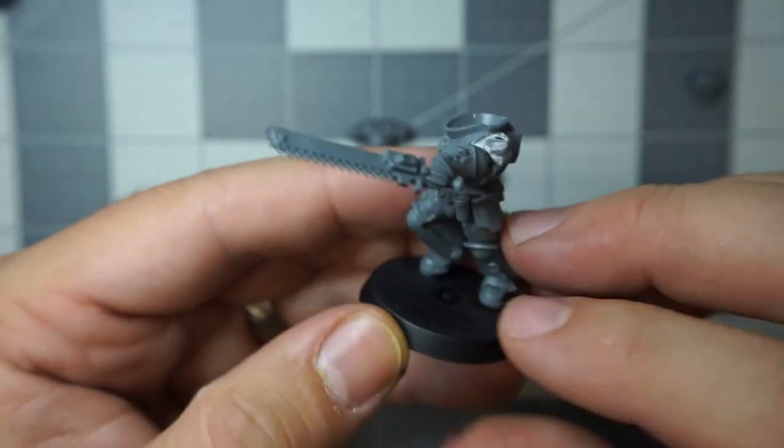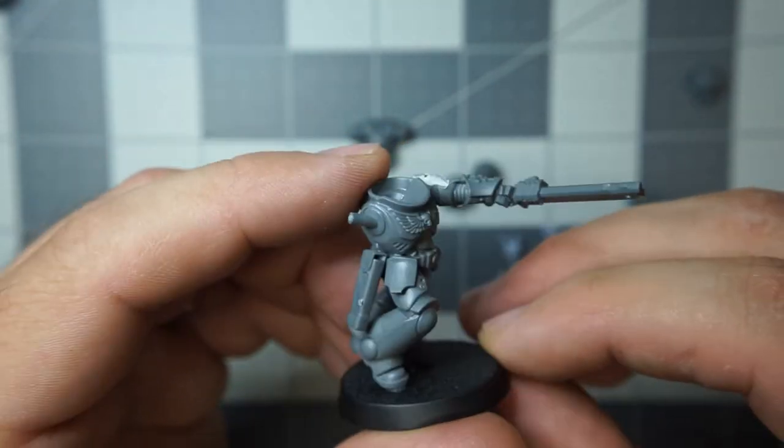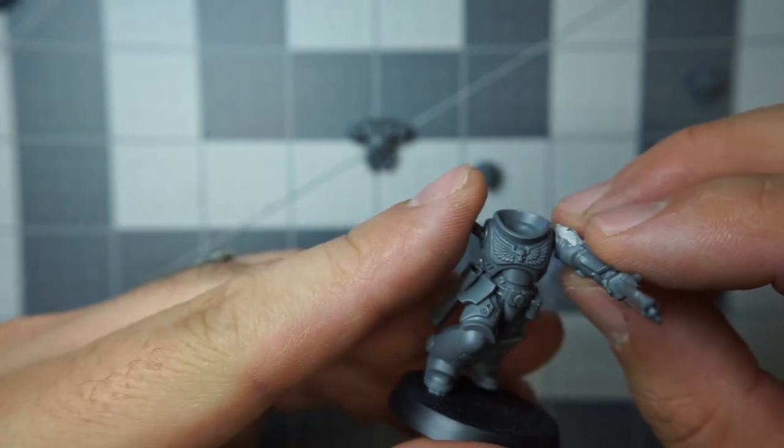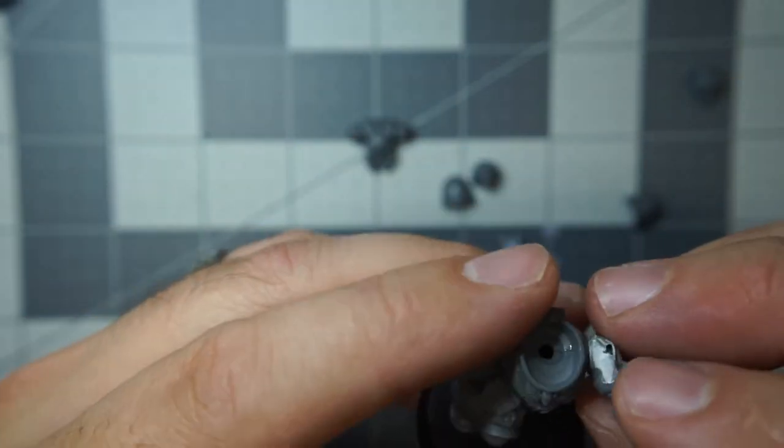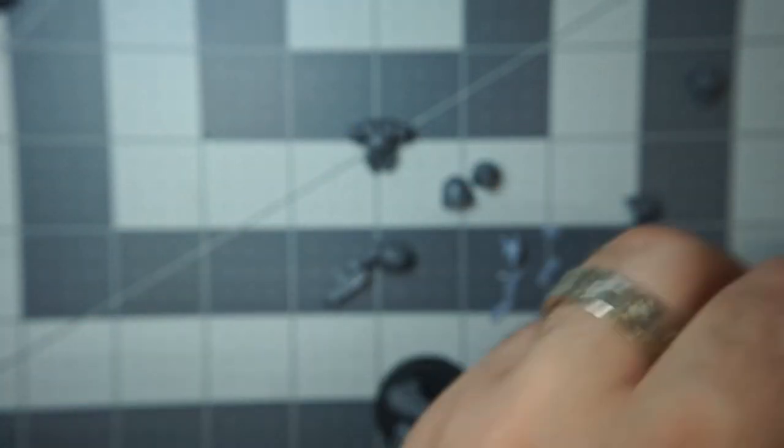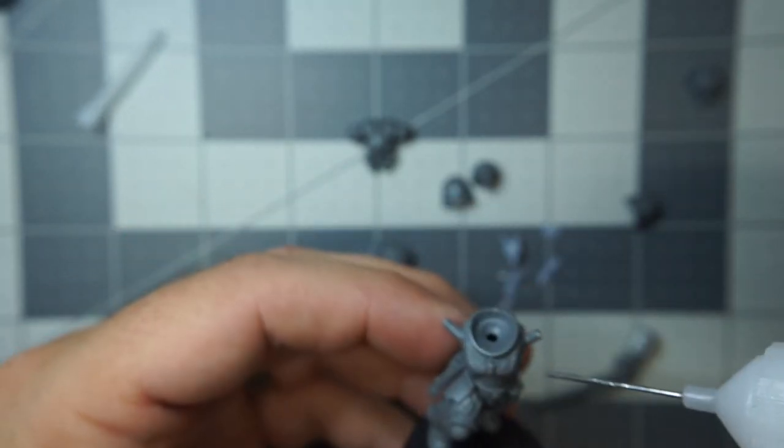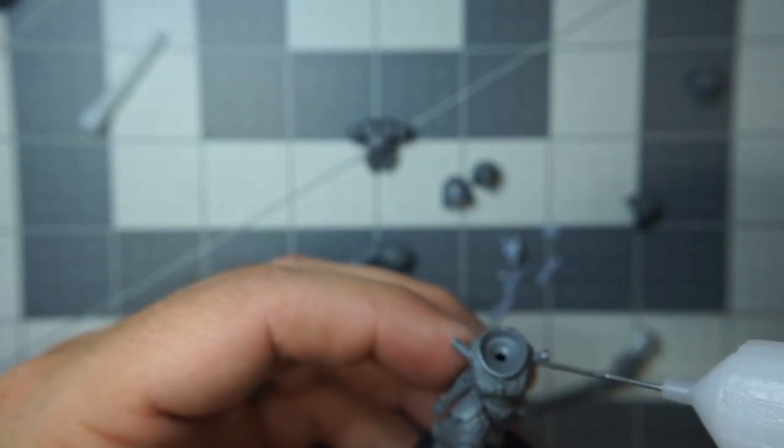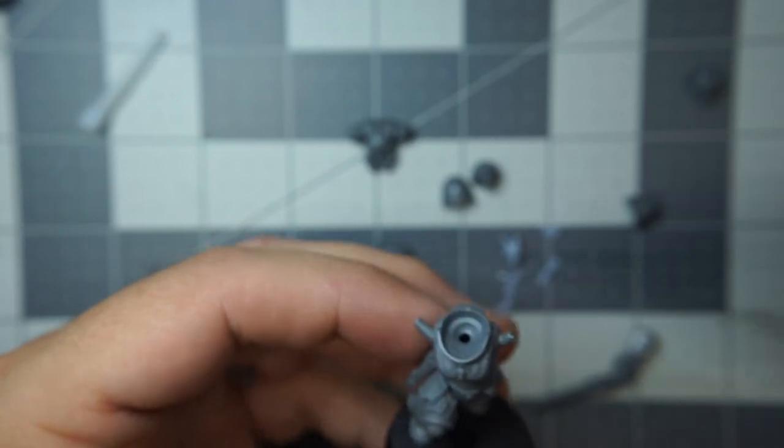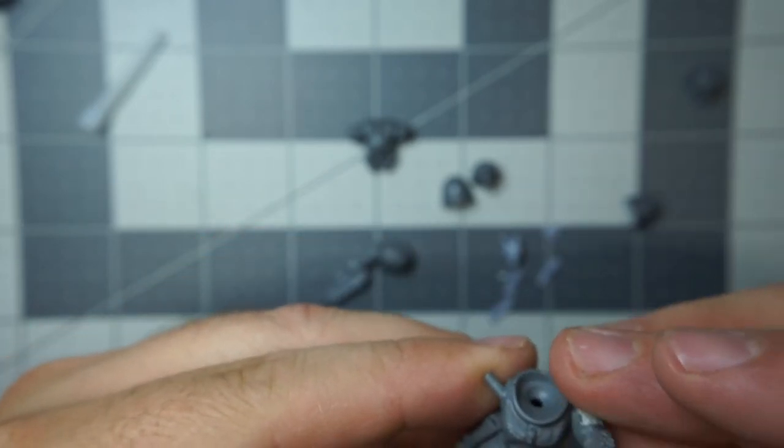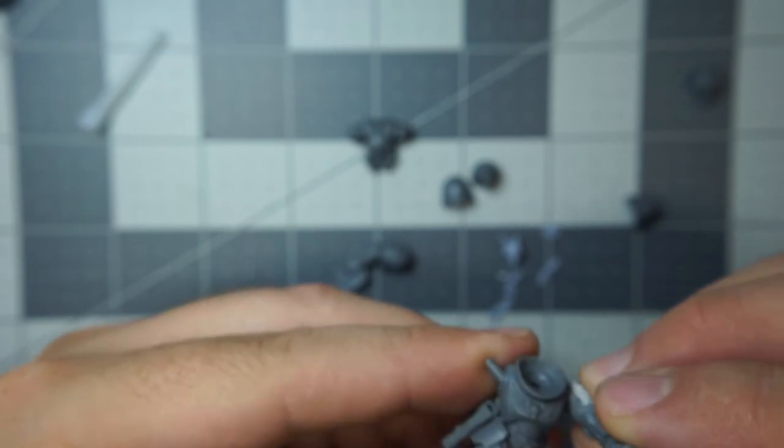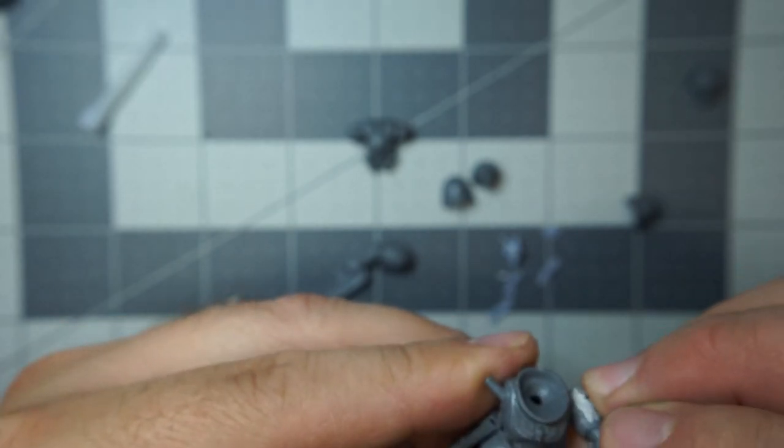Anyway. That looks pretty good. His arm is pretty flush in there. Alright. So. First step. Let's just glue that arm. Alright. Get the arm into the right position.